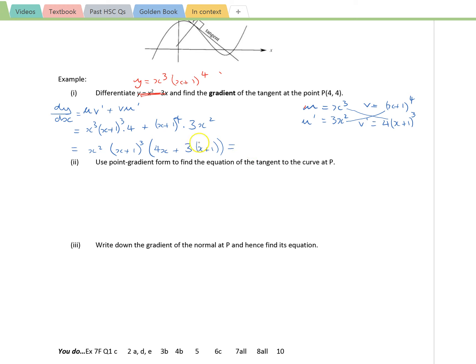That then gives us x squared, x plus 1 cubed, and that would be 4x plus 3x is 7x, and the constant is 3.